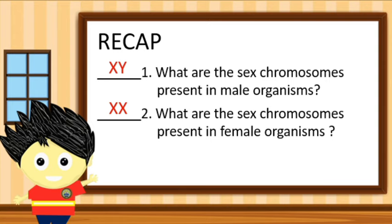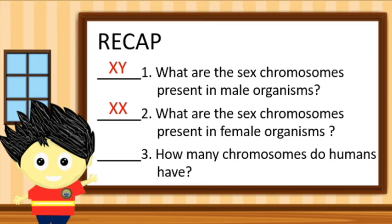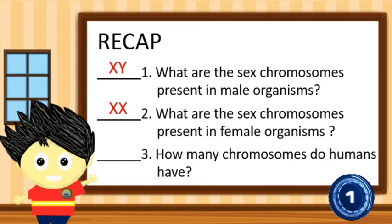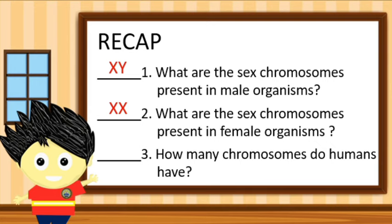Let us proceed on the third item. How many chromosomes do humans have? The correct answer is 46. We all know that humans have 46 chromosomes in their respective cells.